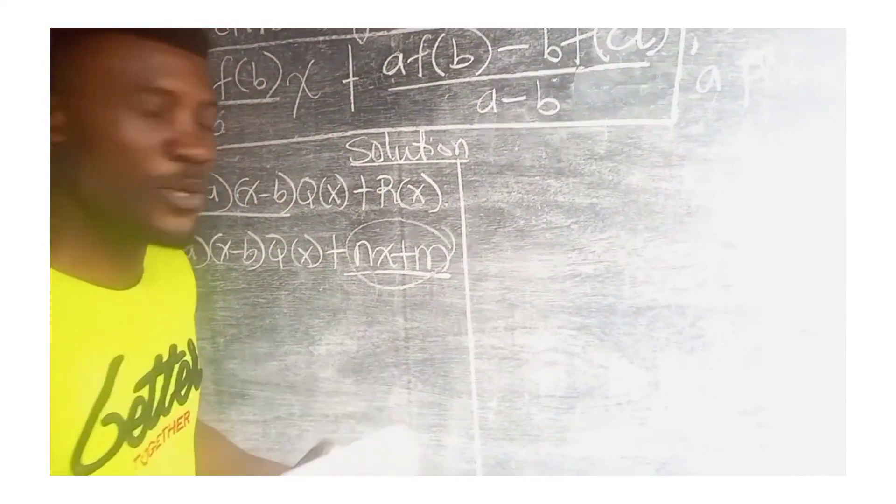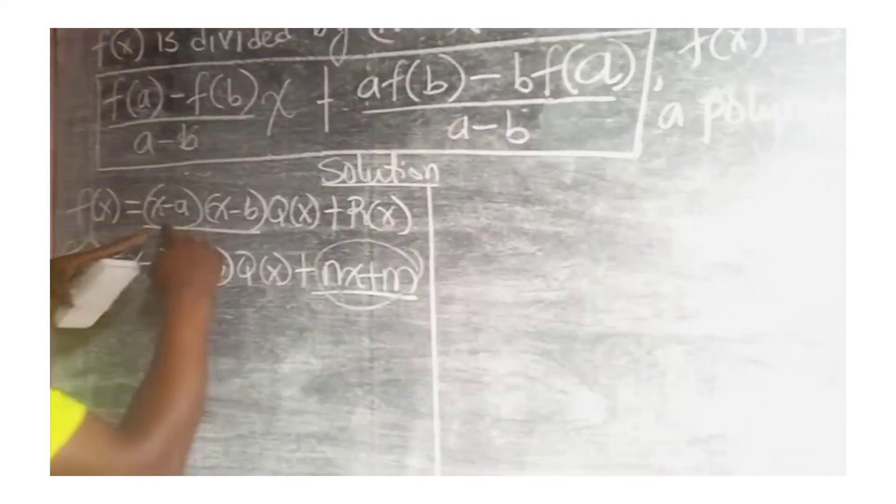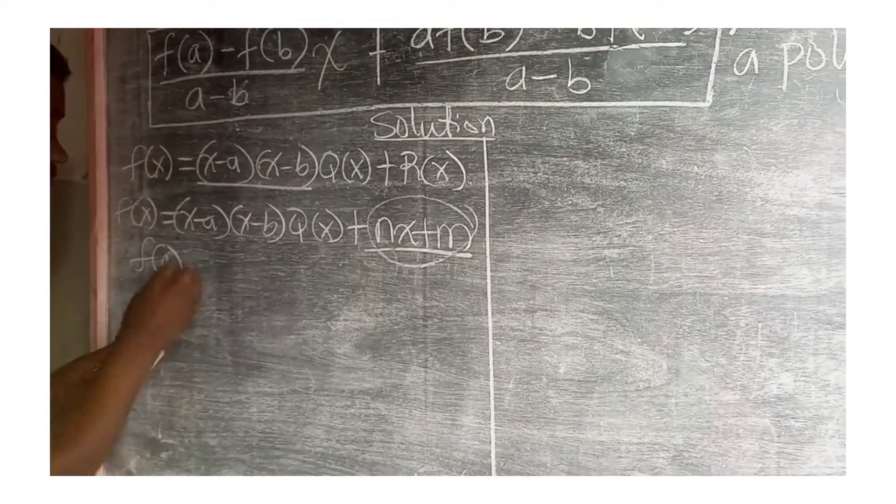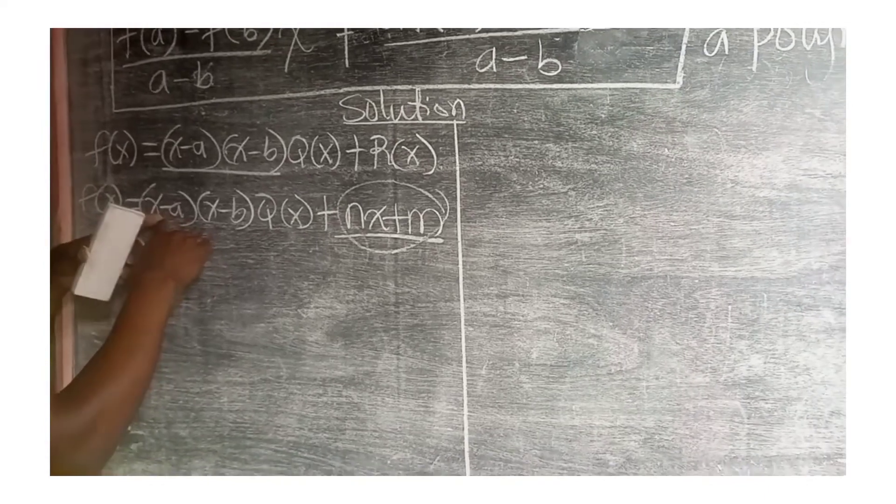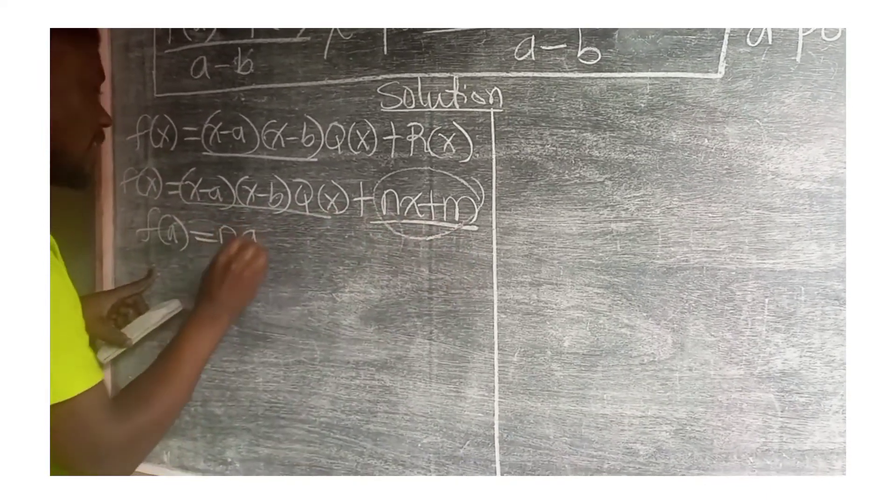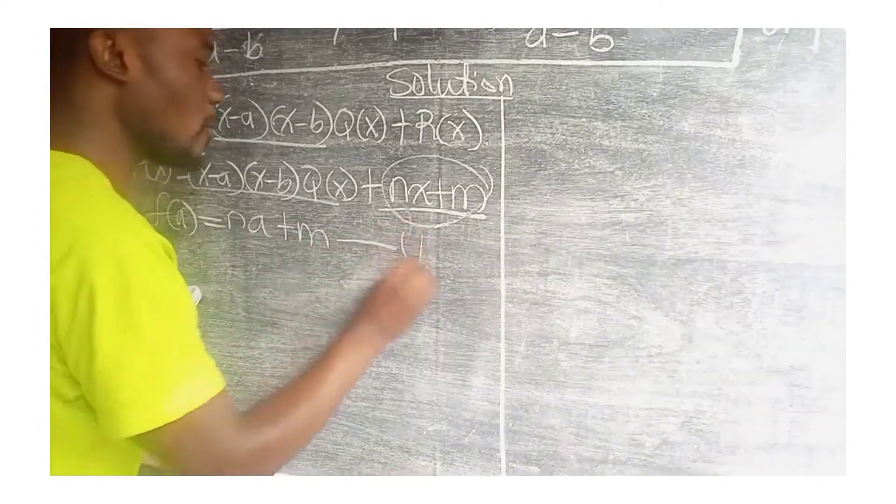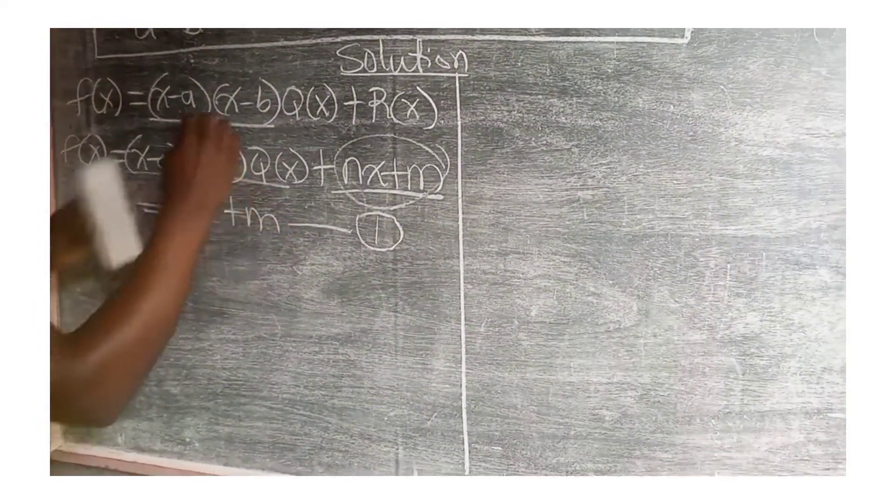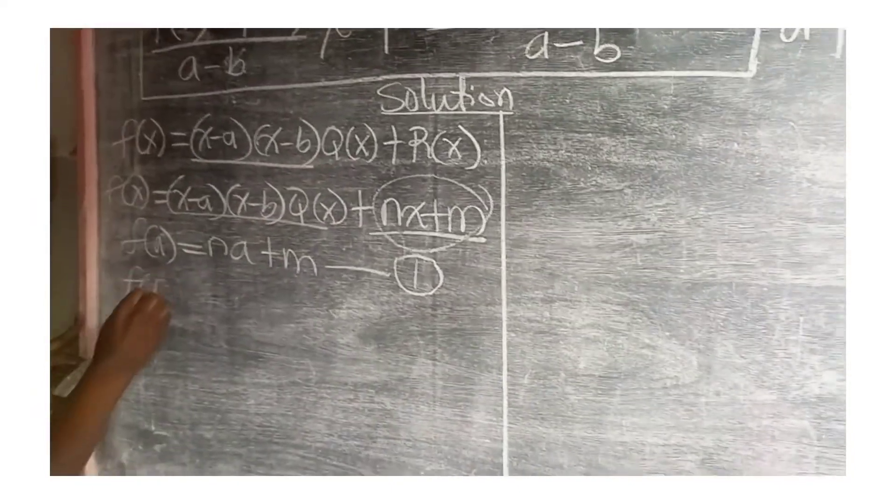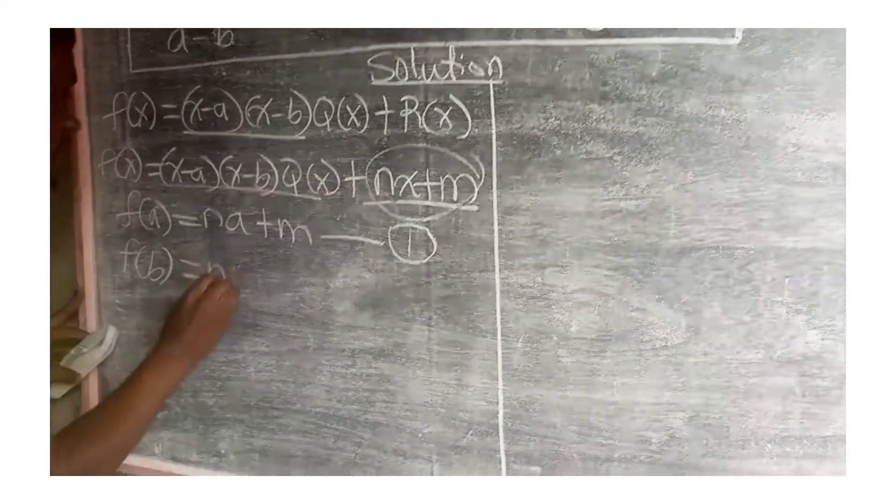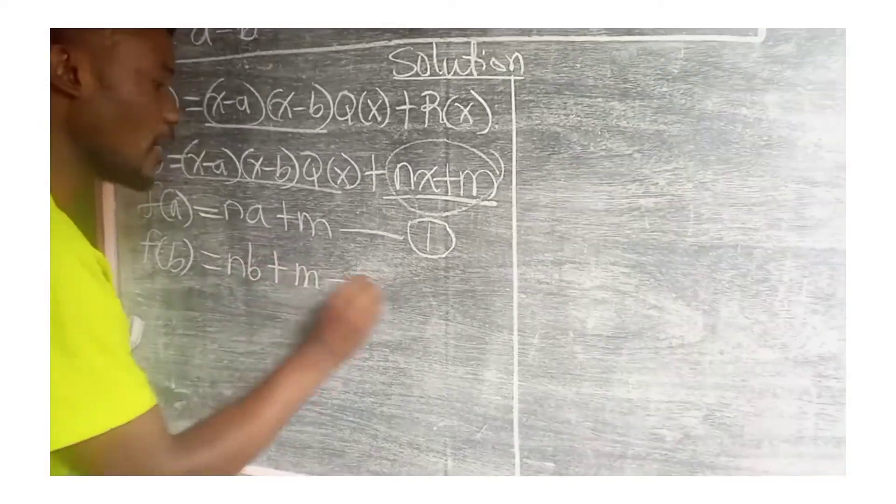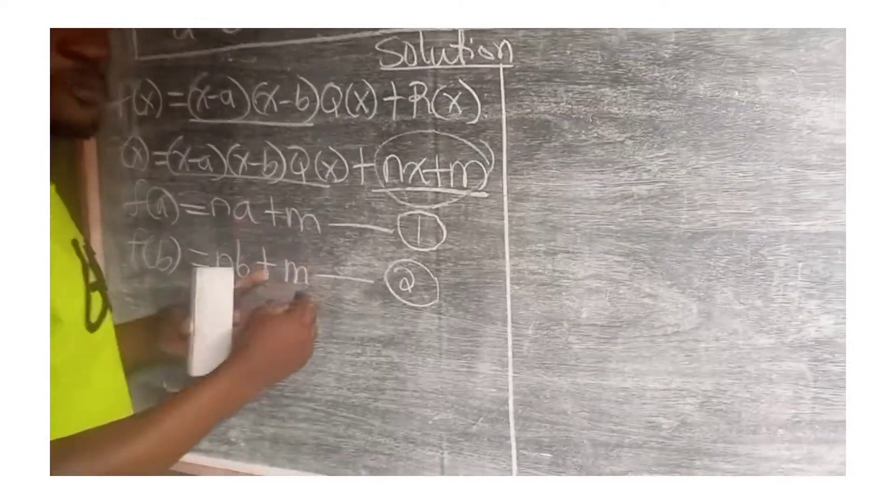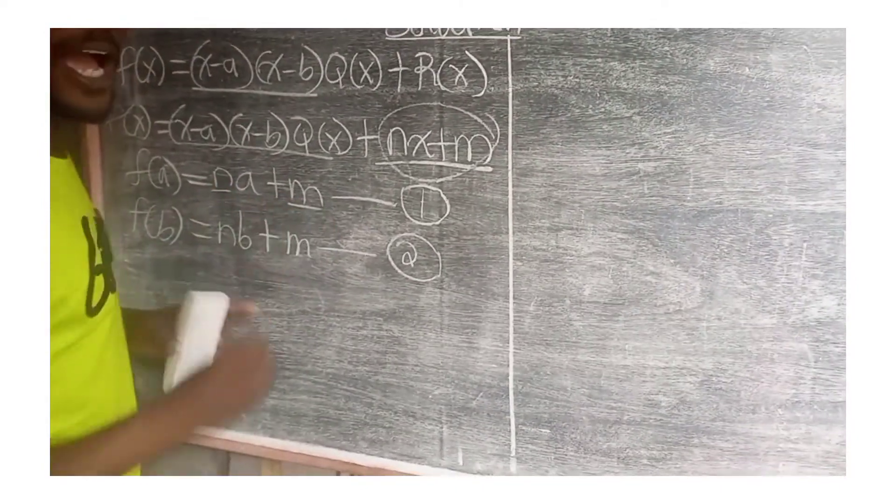Now, how do we find it? We still use the remainder theorem, which says that if f(x) is divided by x-a, then the remainder will be f(a), which is equal to, if you substitute f(a) here, all of this will vanish to leave you with only na+m. Call this equation 1. And then, when f(x) is divided by x-b, we are going to have f(b) equal to nb+m equation 2. This is our two remainders. From these two equations, we solve them simultaneously for the values of n and m.